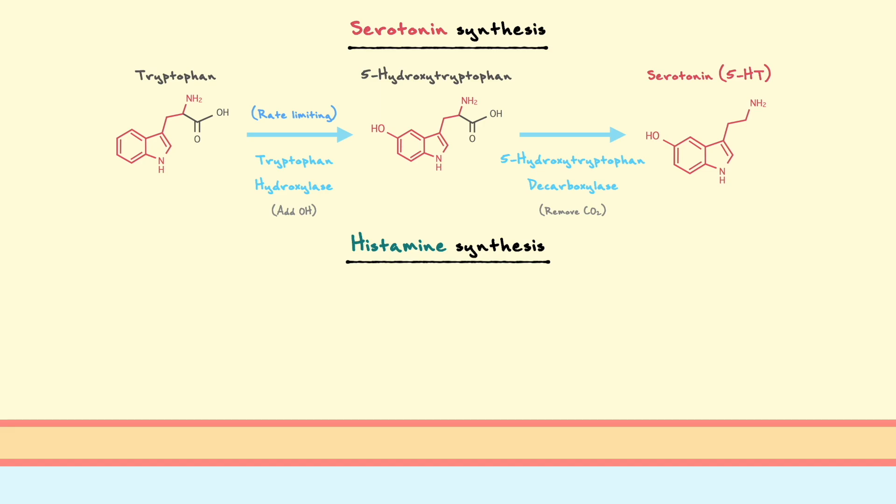As a side note, serotonin is also often referred to as 5-HT because that is the abbreviation of its molecular name, 5-hydroxytryptamine. In this short pathway, tryptophan hydroxylase is the rate-limiting enzyme. For histamine, this neurotransmitter is made from the essential amino acid histidine through a decarboxylation reaction that is catalyzed by histidine decarboxylase.